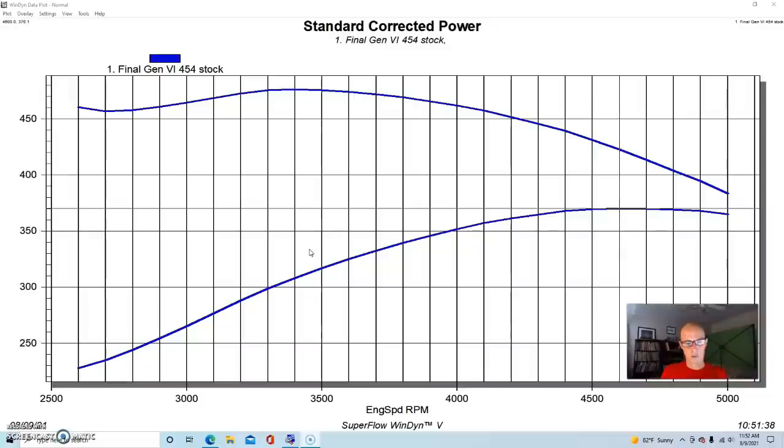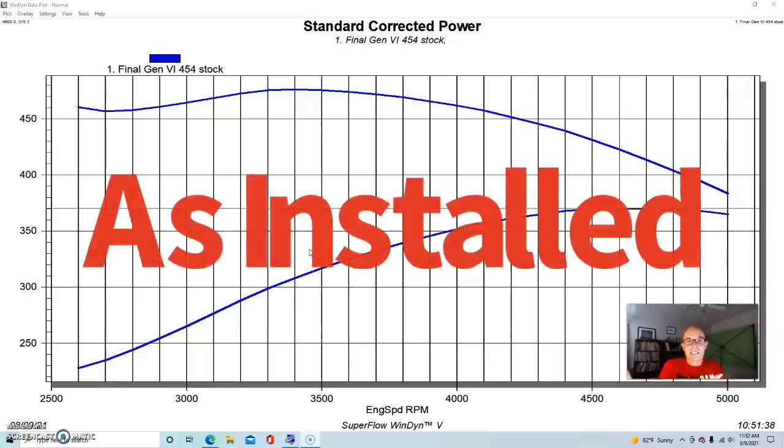But it dropped more because of the way that they rated it. Before, originally they were rating the motors the way that they run them on the engine dyno, kind of like we run here. And then after the net rating - and the original one was gross - after the net rating they started rating it the way that it is actually in the car.